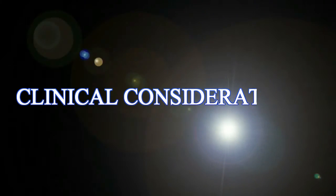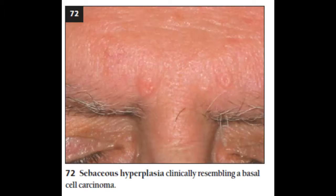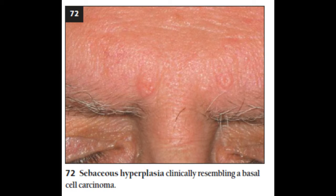Clinical Considerations. The most common clinical presentation of sebaceous hyperplasia is that of solitary or multiple yellowish papules, frequently with central umbilication around the follicular ostium and pearly appearance, thus most frequently resembling a basal cell carcinoma.